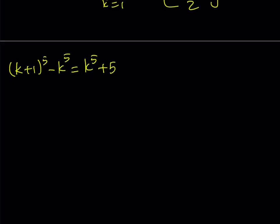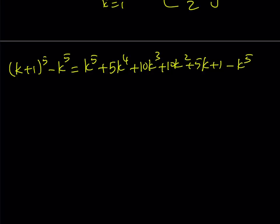Using the binomial theorem, the coefficients for the fifth power are: 1, 5, 10, 10, 5, 1. So expanding k plus 1 to the fifth power and subtracting k to the fifth power — we can cancel out the k to the fifth power terms, and this gives us a nicer expression.